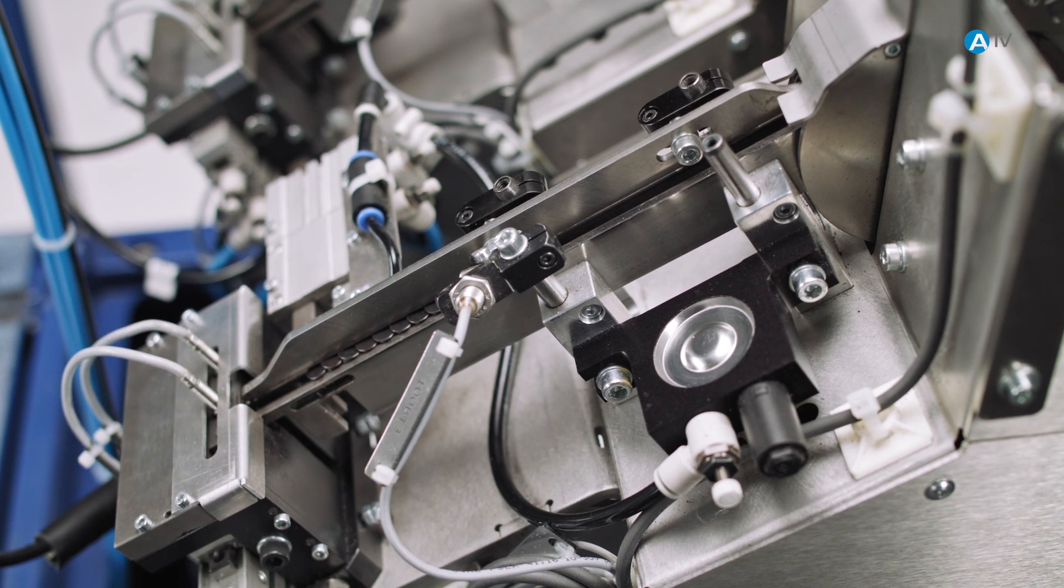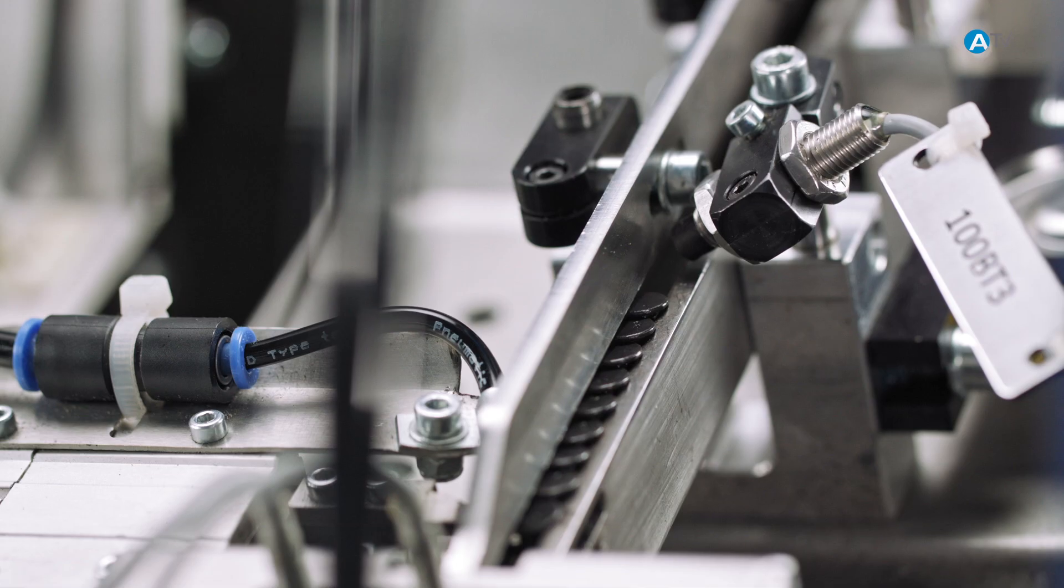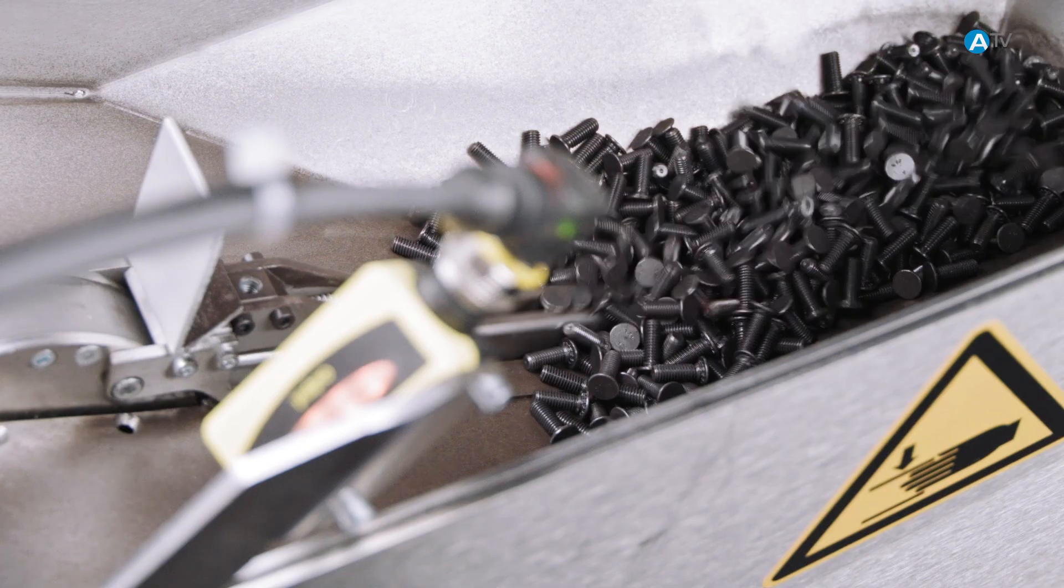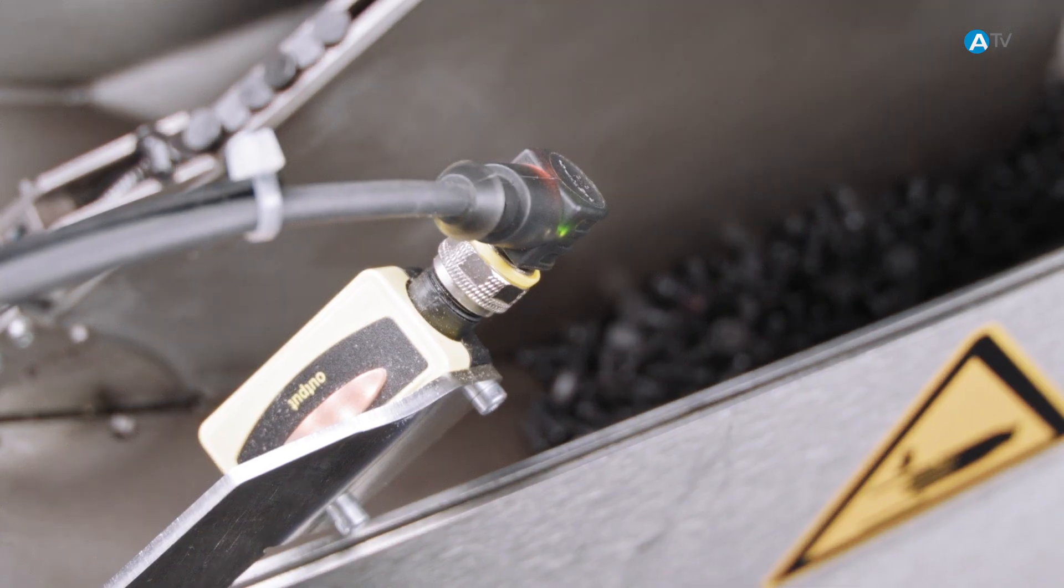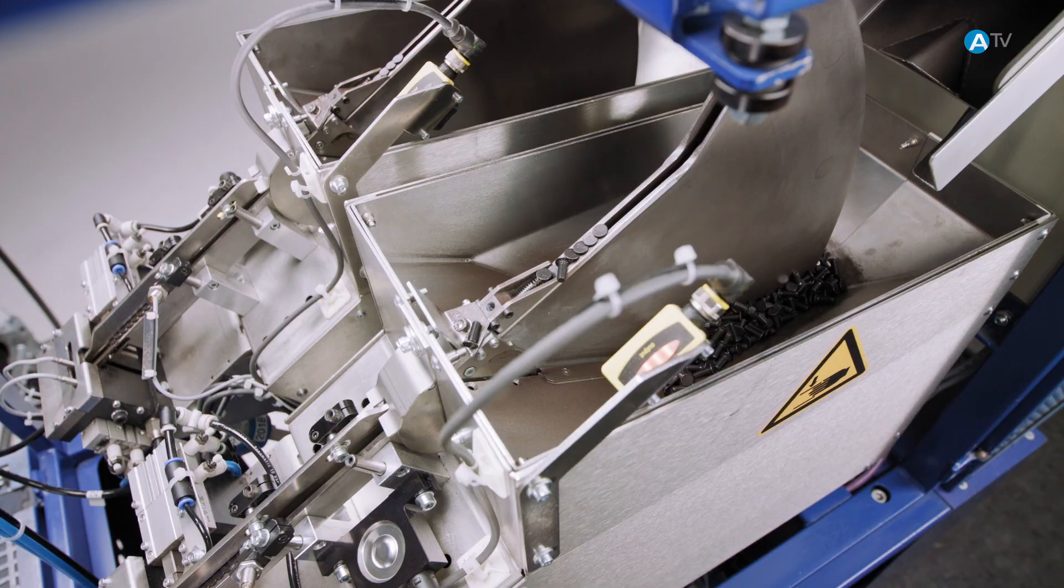The correctly positioned screws slip into the buffer area where they are separated and move towards the processing unit. A sensor monitors the fill level in the buffer area. A laser light sensor registers the fill level in the sword feeder and sends a message to the conveyor hopper, which then automatically tops up with fresh screws.